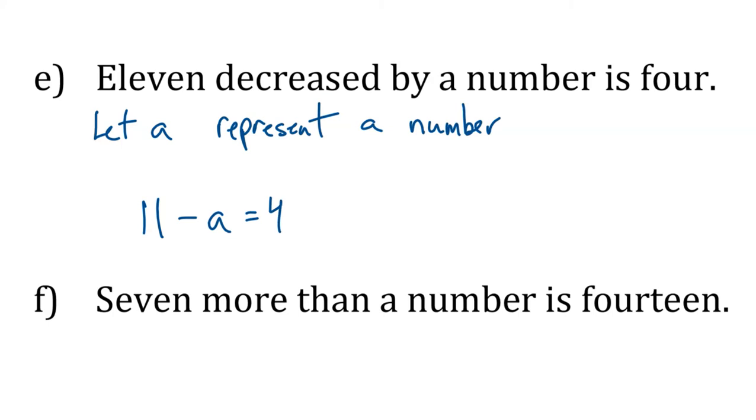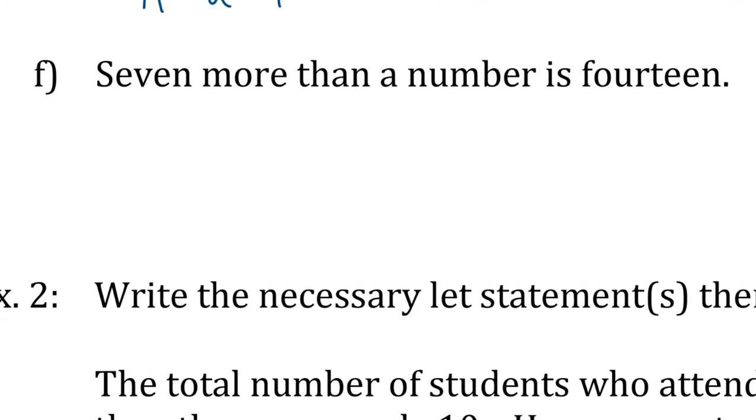11 decreased by a number. So the number is a thing we don't know. 11 decreased by A, or whatever letter you pick, is 4. So is, you can see, kind of means equals. So equals 4.